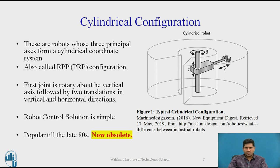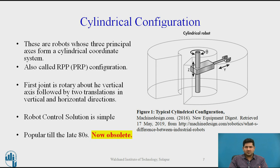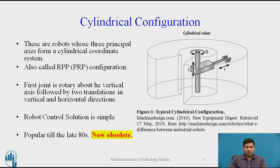The cylindrical configuration has a very simple robot control solution. It was very popular until the 1980s but is now obsolete. If you look up any top industrial robot manufacturer's website, you will not find this configuration in their current product lineup. I have come across Cartesian and parallel delta configurations, but invariably all current configurations are jointed arm configurations. So nowadays this configuration is simply not in use.